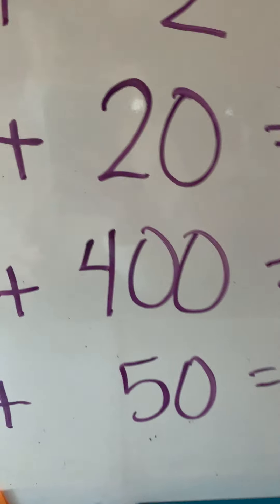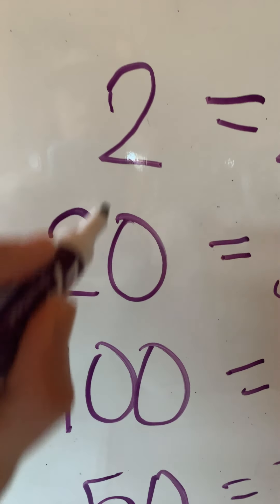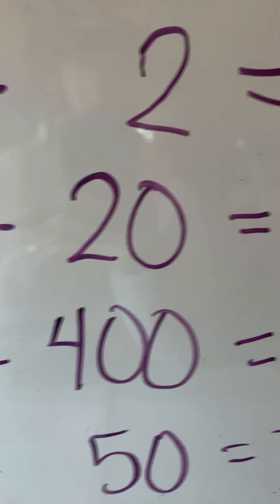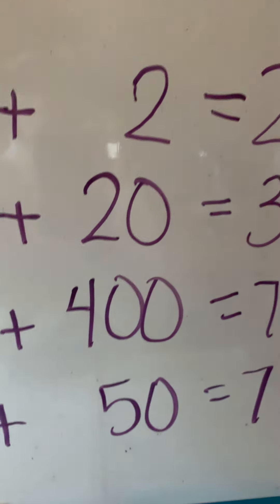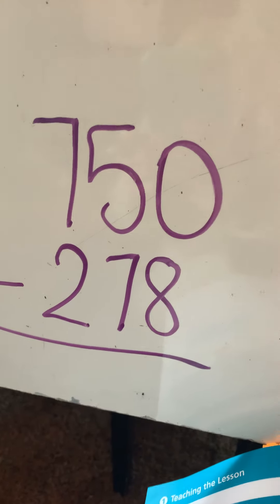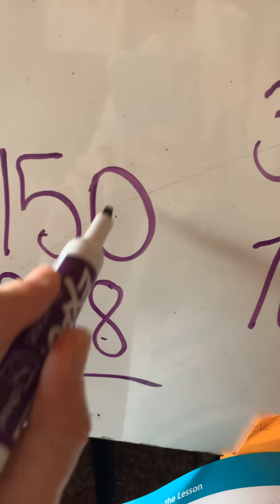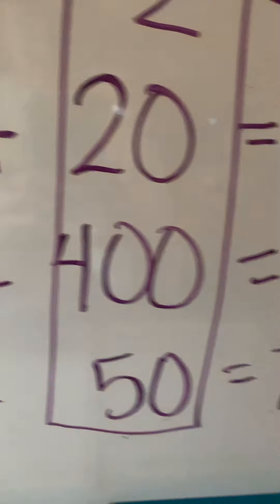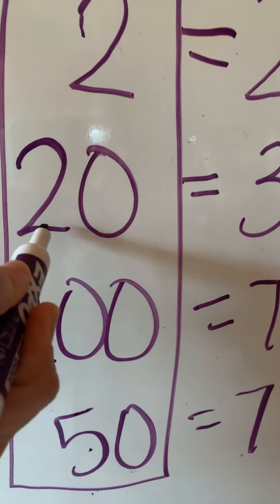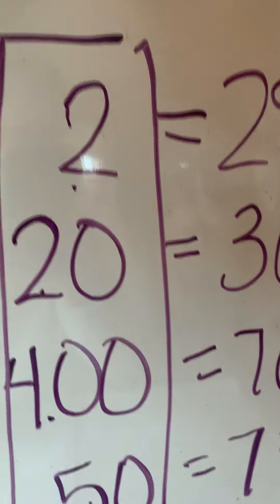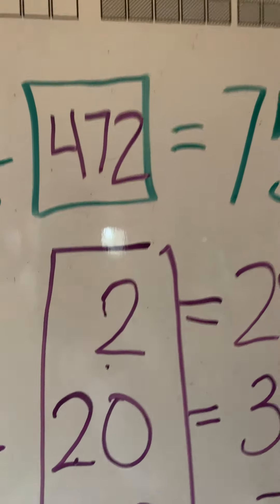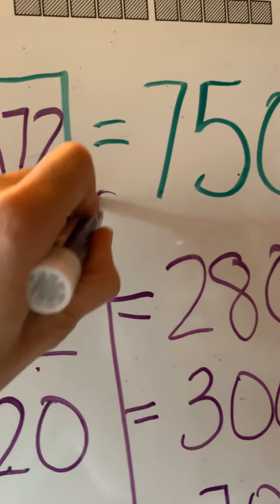It's kind of like solving a puzzle — like counting back change. We start with pennies, then we go to dimes, then we go to dollars. So how do we add this up? We start with 400, 450, 470, 472 is the answer. So 472 yams is the answer for number 1.